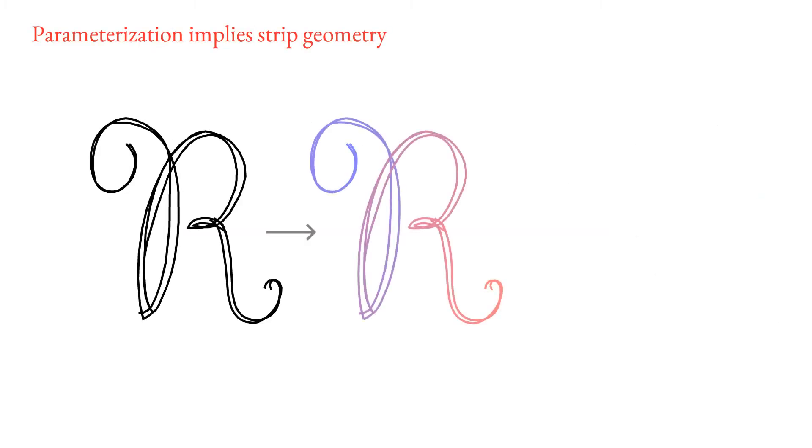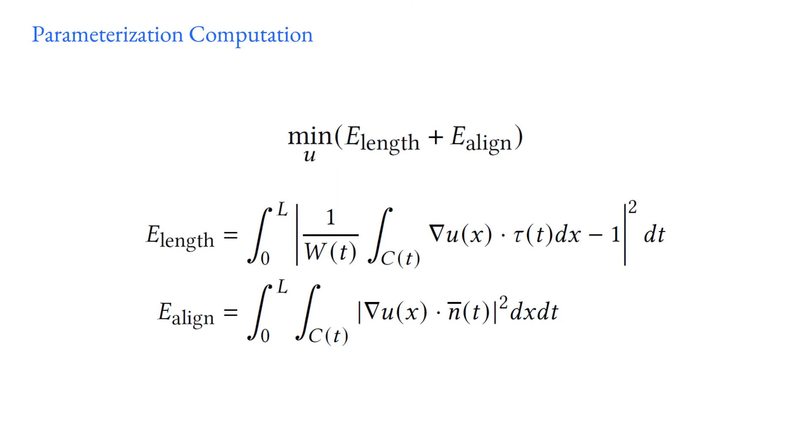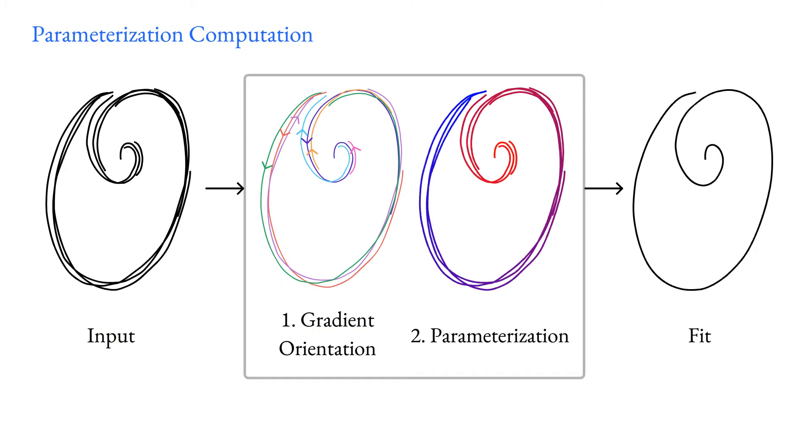We simultaneously compute the joint cluster parameterization and implicitly reconstruct the a priori unknown strip geometry by casting this computation as a minimization of a discrete continuous variational problem. We solve this complex problem using a two-step process.